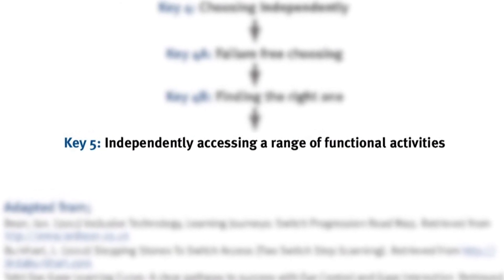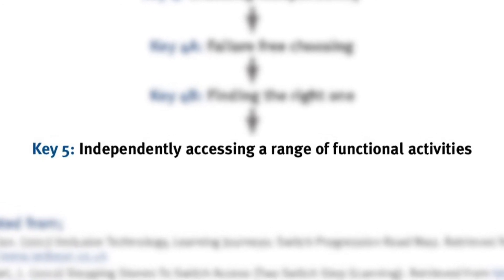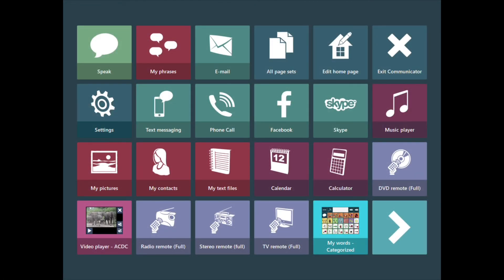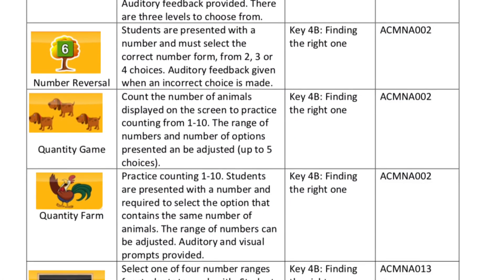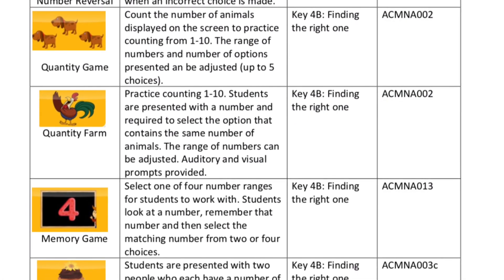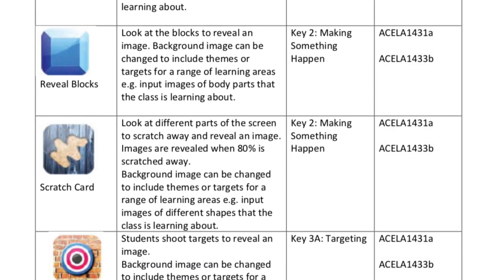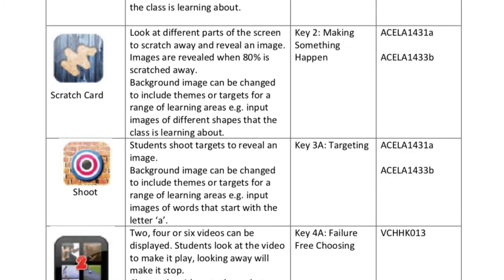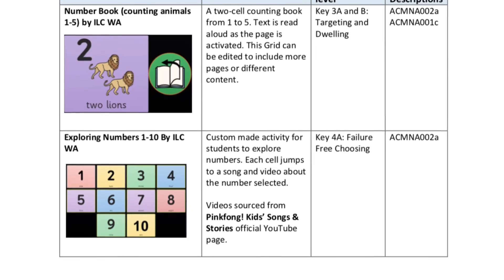Key 5: Independently accessing a range of functional activities. Software like Grid 3 and Communicator 5 have pages that can allow students to access different tools like calculators. For more information on using eye gaze technology to access the mathematics curriculum, you can download the handouts on the different eye gaze software through the Engaging in EyeGaze Access All Learning Areas Project.